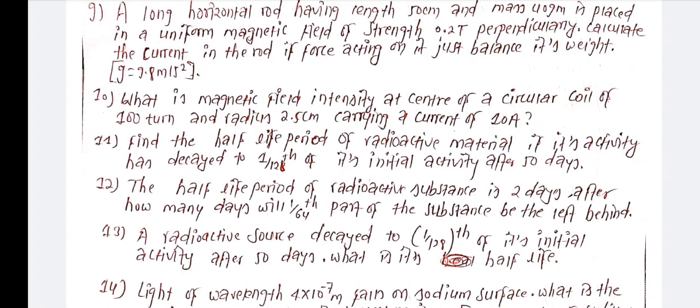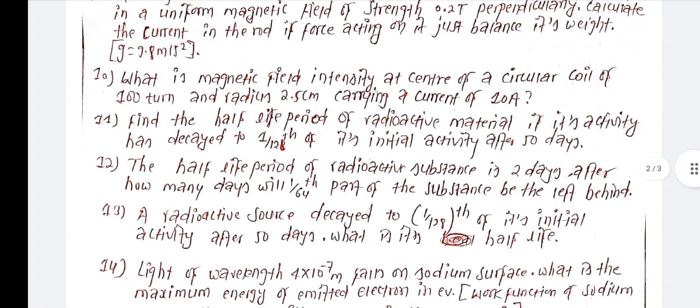The half-life period of a radioactive substance is 2 days. After how many days will 1 by 64th part of the substance be left? Also, a radioactive source reduces to 1 by 120th of its initial activity after 50 days — what is its half-life?